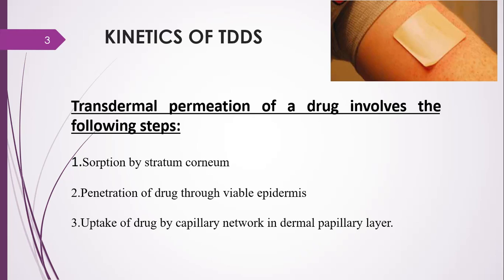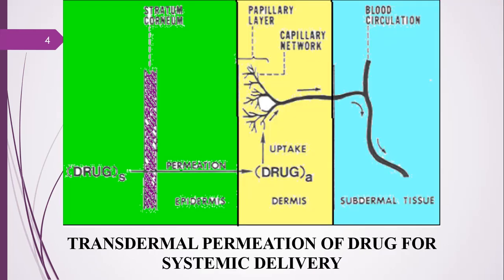The transdermal permeation of the drug involves three steps. The first one is sorption by the stratum corneum. The second is the penetration of drug through the viable epidermis, and the third one is uptake of drug by the capillary network in the dermal papillary layer. The absorption of the drug takes place through the stratum corneum into the epidermis, and in the dermis the drug is taken up via the capillary network of the papillary layer, entering systemic circulation.